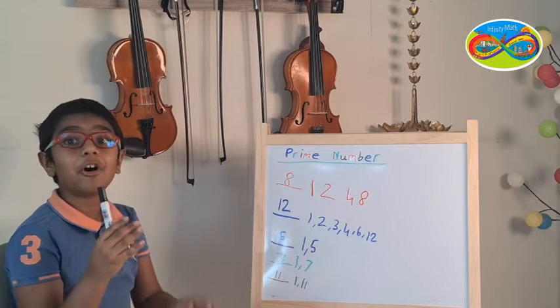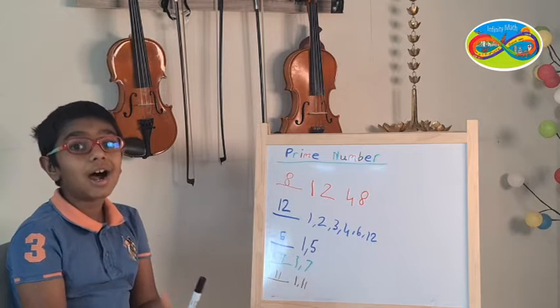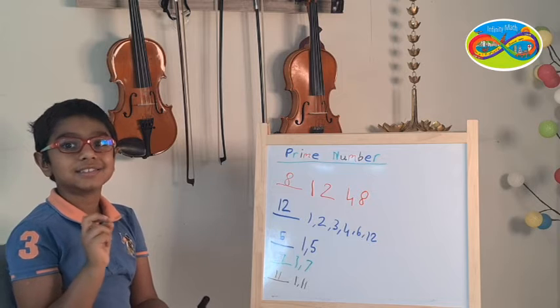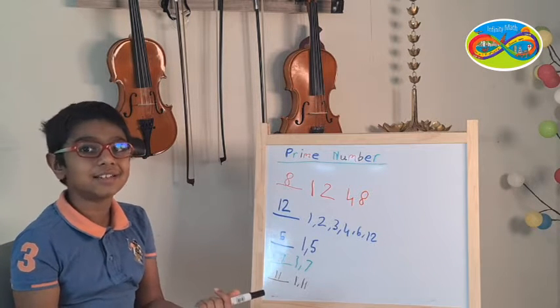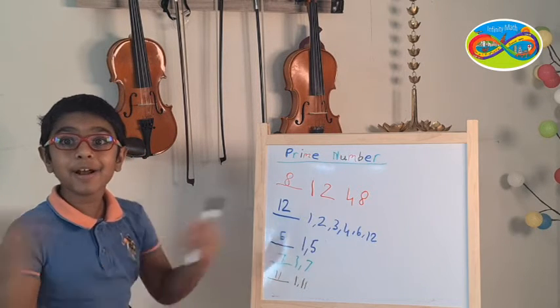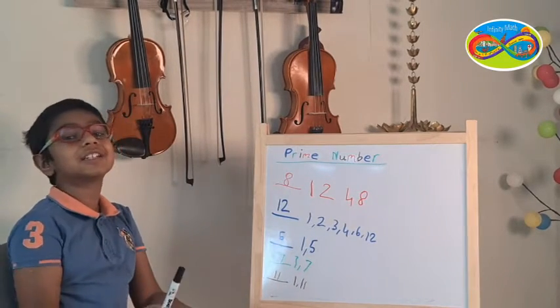Yes. They are called prime numbers. Prime numbers are numbers that have only 2 factors. 1 and the number itself. So 5, 7 and 11 are prime numbers. That's why they have 2 factors.